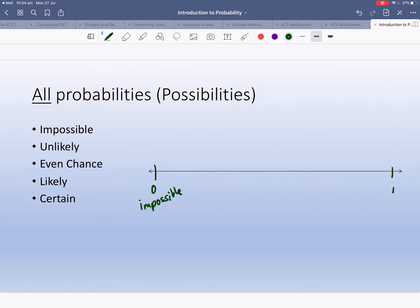Certain - what's certain? The sun will rise tomorrow. So those are the kind of things. That's impossible down the bottom, certain is at the top.